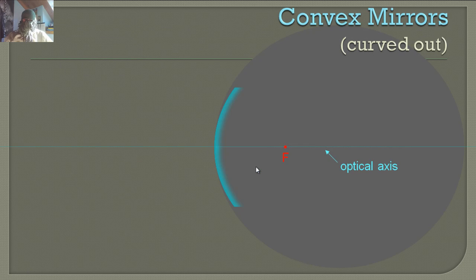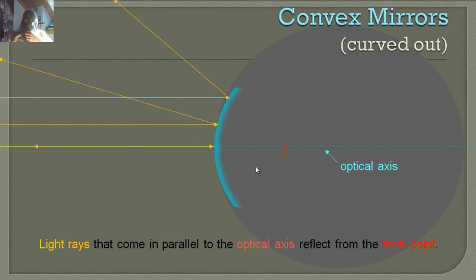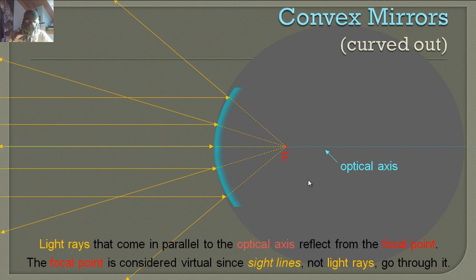Now for convex mirrors — the last type. Light rays that come in parallel to the optical axis reflect from the focal point: if you continue all reflected rays back with sight lines, they're going to meet at that focal point. The focal point is considered virtual since sight lines, not light rays, go through it. Real focal points are ones that actual light rays go through.